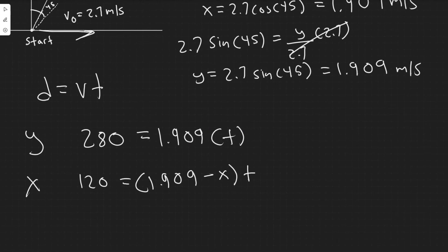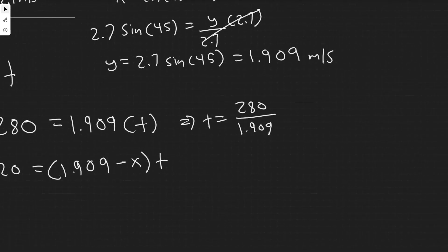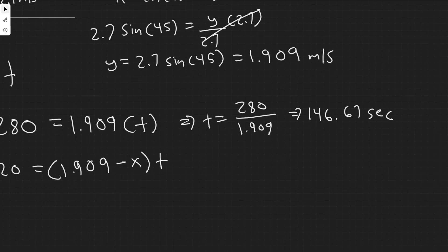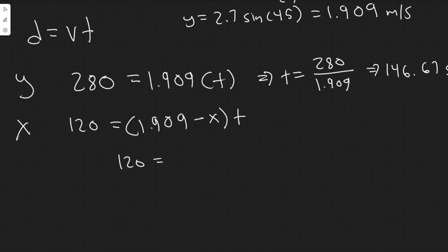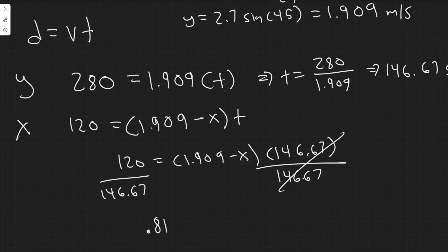Solving for time: t = 280 / 1.909 = 146.67 seconds. Now substituting into the x equation: 120 = (1.909 − x) × 146.67. Dividing both sides by 146.67 gives 0.818 = 1.909 − x.